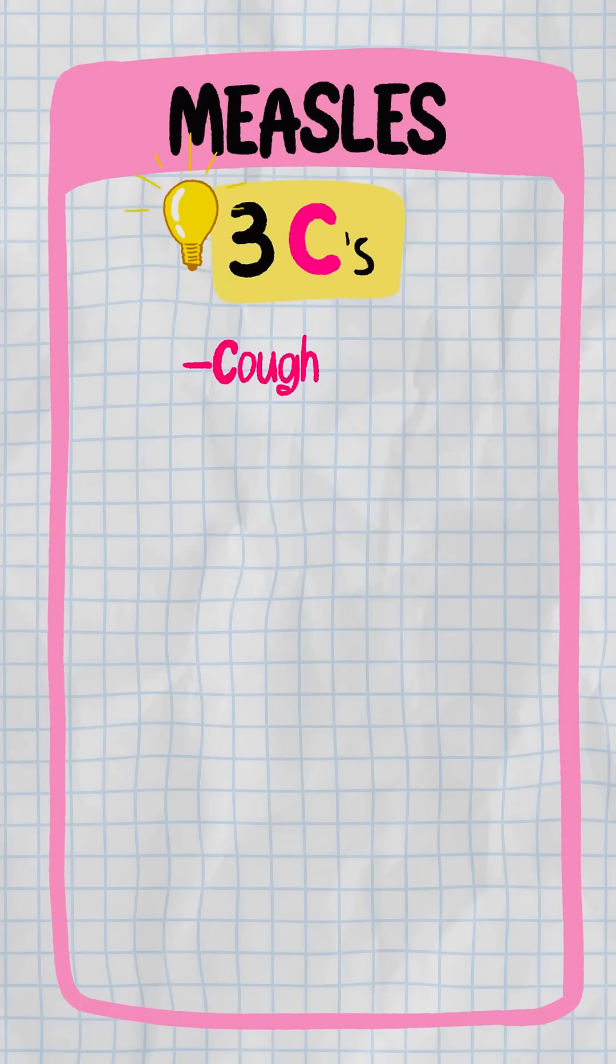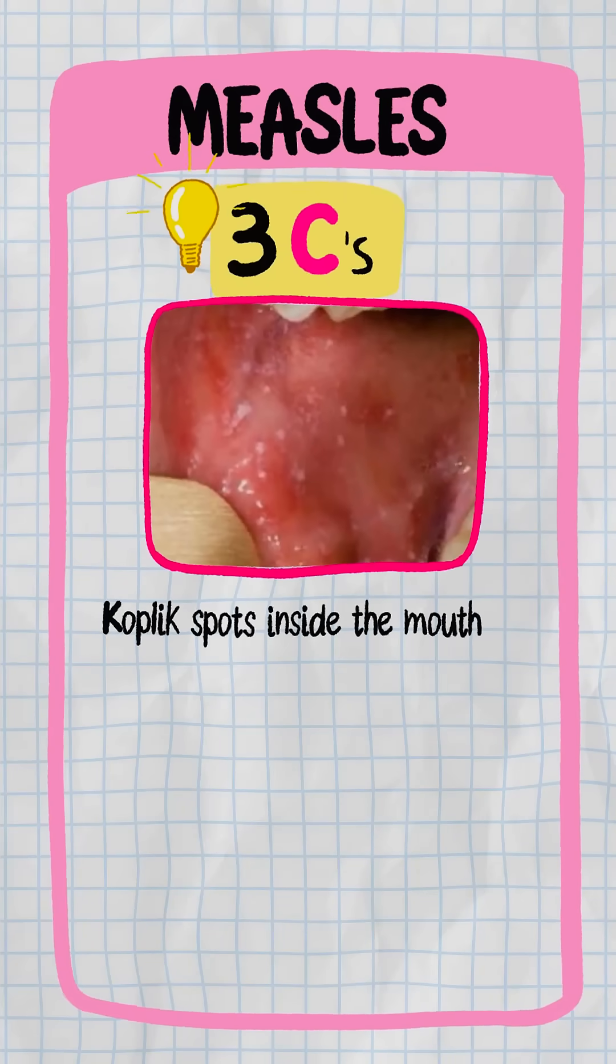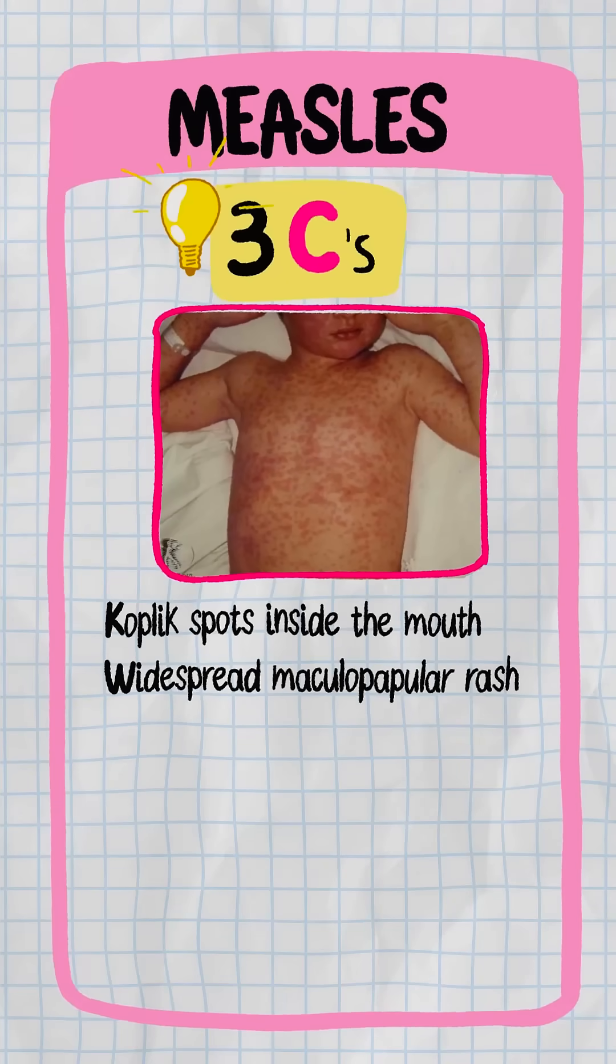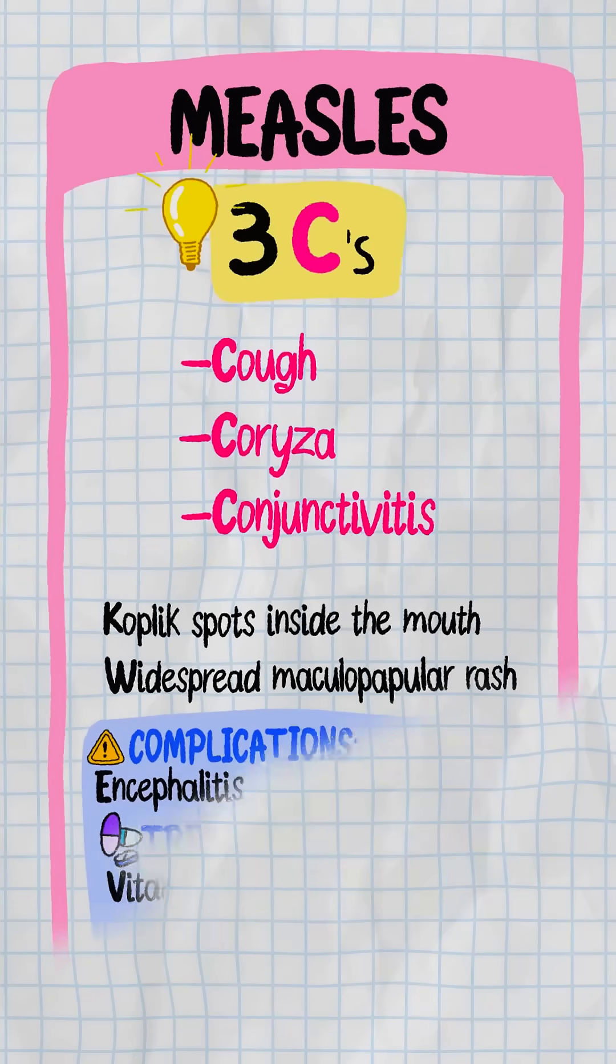Measles starts with the three C's: cough, coryza, and conjunctivitis. Then you'll see Koplik spots inside the mouth, followed by a widespread maculopapular rash. Watch out for late complications like encephalitis. Treat with vitamin A and supportive care.